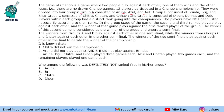Players within each group had a distinct rank going into the championship. Each group has 3 players ranked 1, 2 and 3 — the players have not been listed according to their ranks. In the group stage, the 2nd and 3rd ranked players play against each other first (match 1), and the winner plays against the 1st ranked player (match 2). Whoever wins match 2 is the winner of the group.